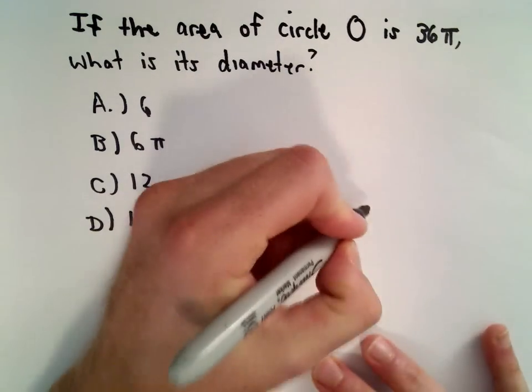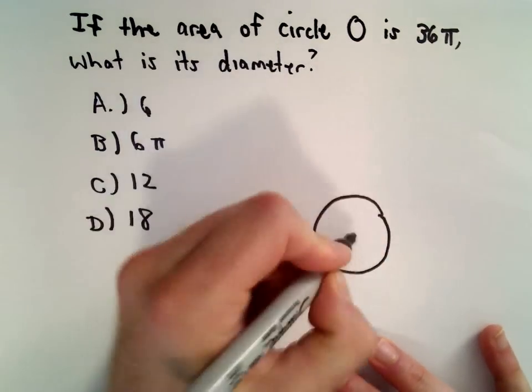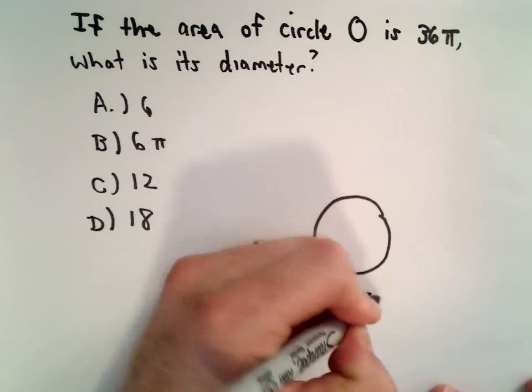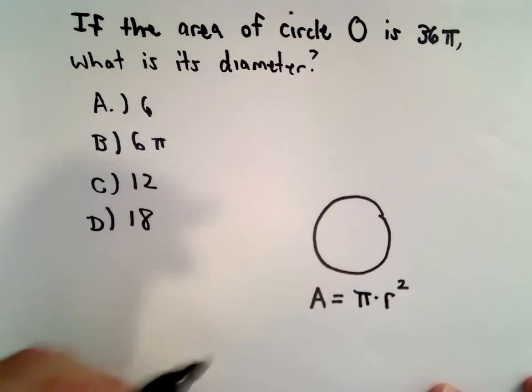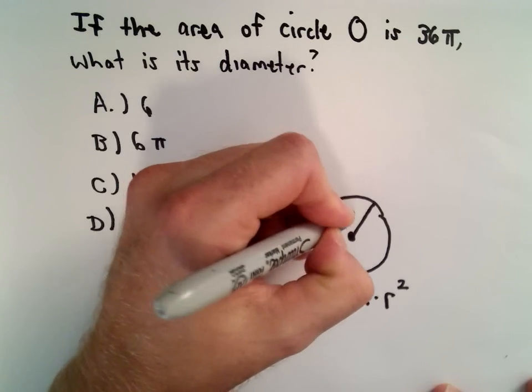Okay, so there's my circle. Recall the area formula for a circle: we use π multiplied by the radius squared. And the radius is just the distance from the center of the circle out to one edge.